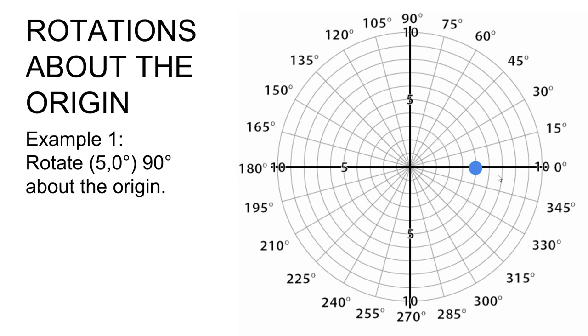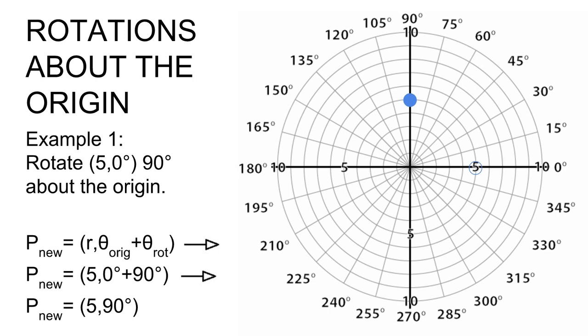This is the formula you use. You simply add together the original angle that locates your point and add it to the rotation angle. So we're going to add 0 and 90 degrees, which gets us (5, 90°). I like to put a box around my answers.